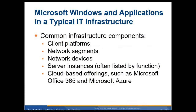Common infrastructure components include your client machines, whether Linux, Windows, or Apple. Network segments — your LAN segments with patch cables going into wiring closets. Network devices — routers and switches. Servers are usually listed by function: a web server has web software installed, a DNS server has DNS software installed. Cloud-based offerings such as Microsoft Office 365 and Microsoft Azure. So much is going to the cloud now.